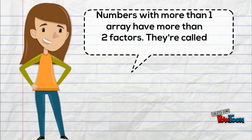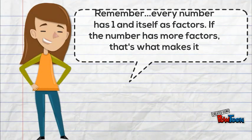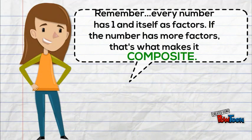Numbers with more than one array have more than 2 factors. They're called composite numbers. Remember, every number has 1 and itself as factors. If the number has more factors, that's what makes it composite.